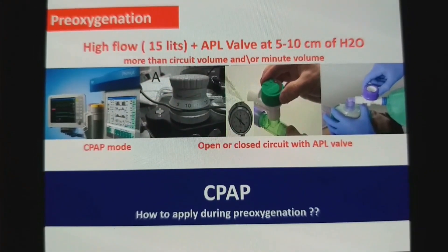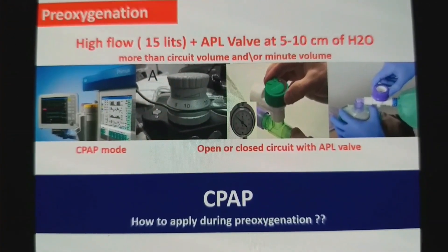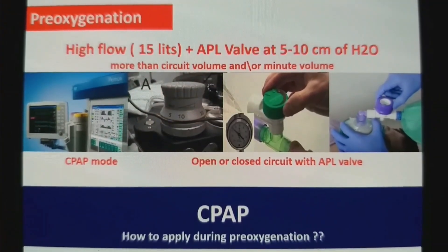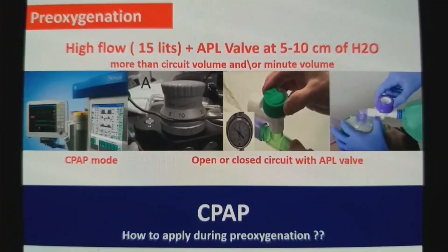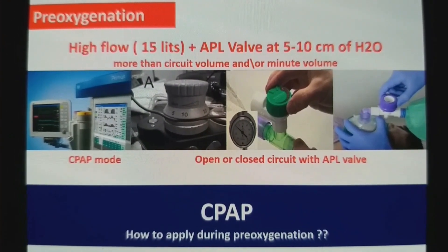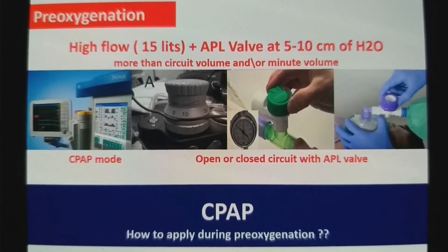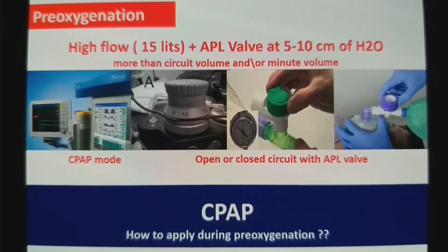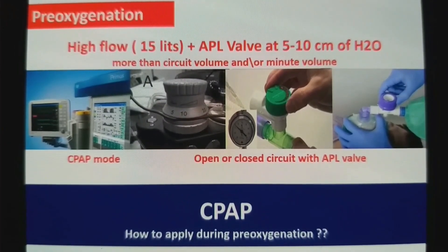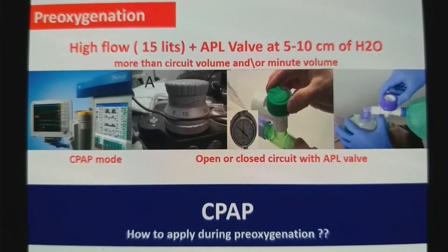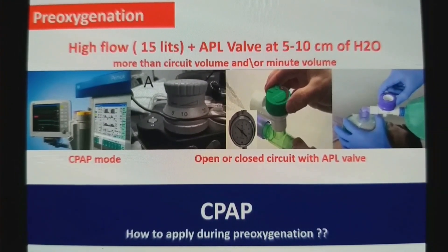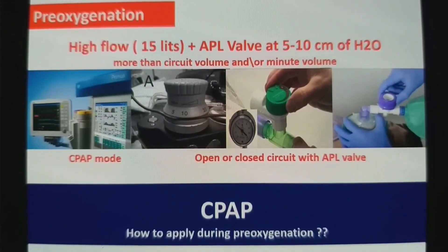How to deliver CPAP? During pre-oxygenation, if your machine has a CPAP mode, you can deliver CPAP directly. If your machine does not have a CPAP mode and you are using a closed circuit, keep the APL valve closed at 10, increase the oxygen flow to 15 liters, and optimal mask fitting will deliver 5–10 cmH2O CPAP.